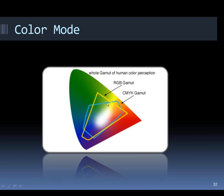Even smaller than the RGB gamut is what we can actually print — the CMYK gamut. This diagram is useful because it shows that RGB and CMYK represent good color ranges, but it has a problem: the CMYK gamut appears to go outside the RGB gamut in several areas, which is not totally accurate. There's a better way to show the difference between RGB and CMYK.